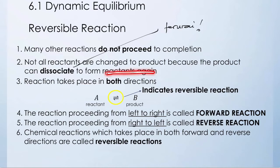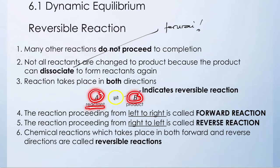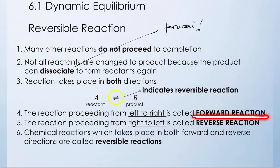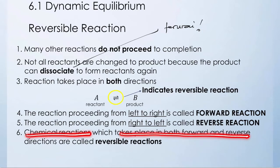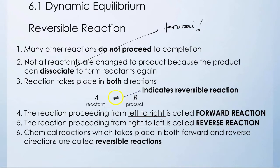In Reversible Reaction, the reaction will take place in both directions. Say we have A producing B — A is the reactant and B is the product. The reaction will proceed from the left to the right; this is what we call the forward reaction. The reaction can also proceed from the right to the left; this is what we call the reverse reaction. A chemical reaction that takes place in both forward and reverse directions is called a reversible reaction, and it is indicated by a double-headed arrow sign.